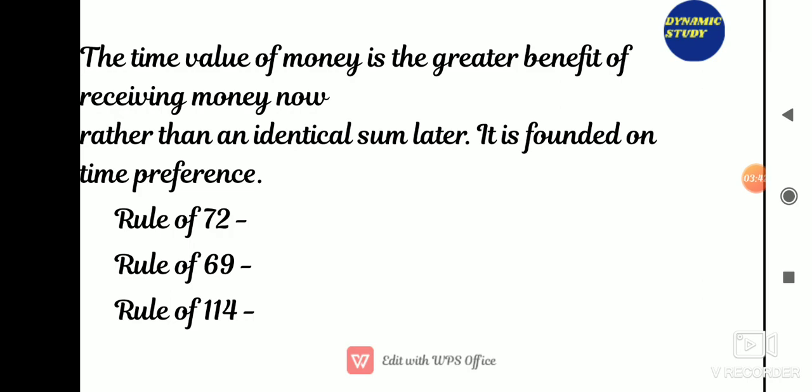There is another rule: Rule 69. Rule 69 is used to estimate the amount of time it will take for an investment to double, assuming continuously compounded interest. The calculation is to divide 69 by the rate of return for an investment and then add 0.35 to the result. For instance, if the rate is 5%, then the doubling period is 0.35 plus 69 divided by 5, which equals 14.15 years. The difference between Rule 72 and Rule 69: both measure the doubling period, but in Rule 72 we divide 72 by the interest rate, while in Rule 69 we divide 69 by the interest rate and then add 0.35.